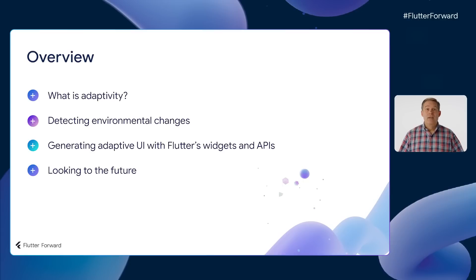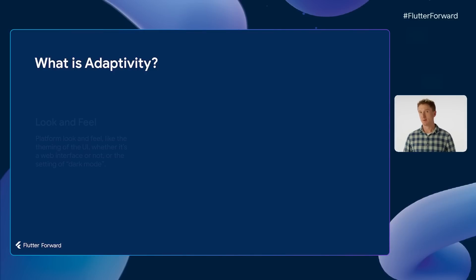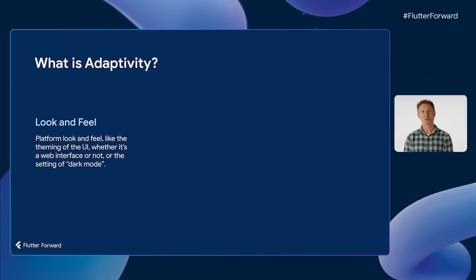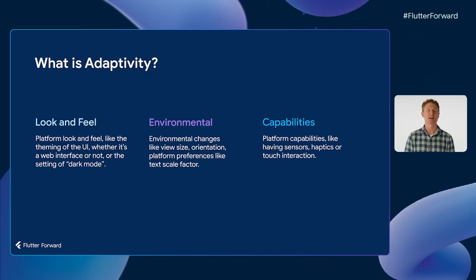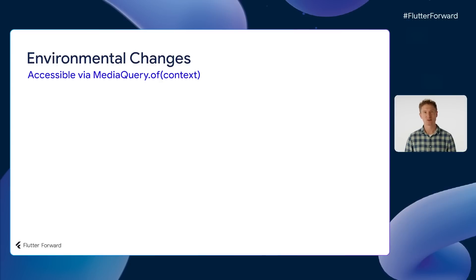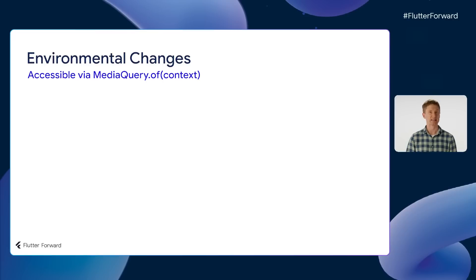We're going to show you some new additions to Flutter that can help you create great adaptive user interfaces. The major types of adaptivity include platform look and feel — like the theming of the UI, whether it's a web interface or not, or the setting of dark mode — environmental changes like view size, orientation, and platform preferences, and platform capabilities like having sensors or touch interaction. Flutter offers a MediaQuery inherited widget that provides access to information about the environment that the app is running in, similar to media queries in CSS. Because it's an inherited widget, it also automatically creates a dependency that will rebuild the given context when needed, so you don't have to worry about getting out of sync. This is what various adaptive scaffolding packages use internally to perform their adaptations.